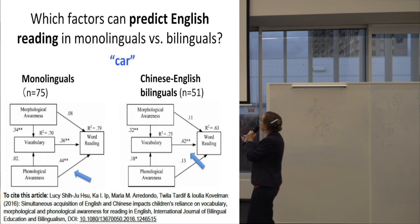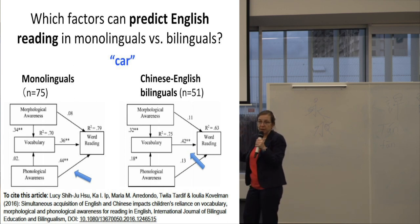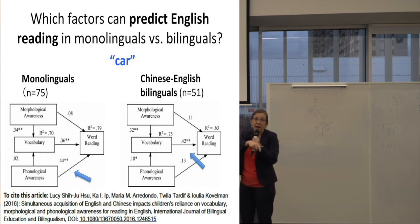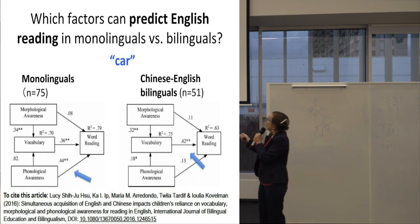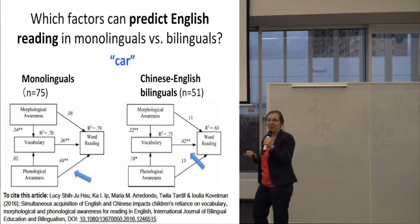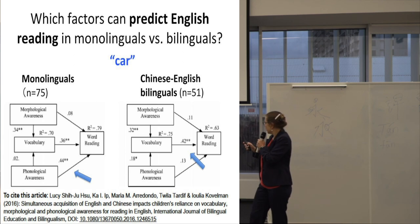Somebody was asking about bilinguals — we're now in bilingual territory. Here is looking at predicting English reading. The question is: does learning to read in Russian, or learning to read in English — does that affect how you read English? Our answer is yes, at least for Chinese. I would predict it would also matter for Russian, and I would love to do something on stress patterns, because it's such an interesting phenomenon.